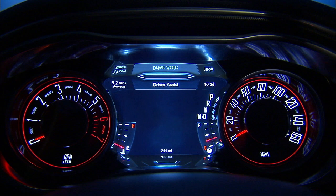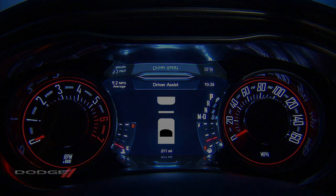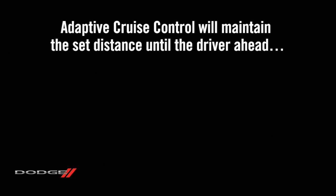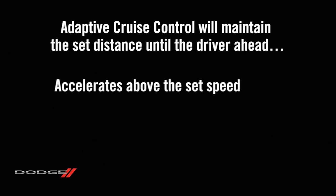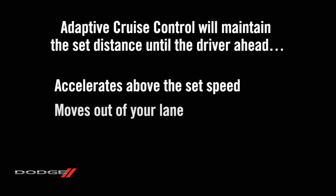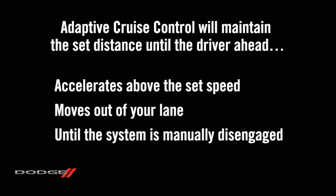You'll see the sensed vehicle indicator icon in the instrument cluster. The system will maintain the set distance until the driver ahead accelerates above the set speed, moves out of your lane, or until the system is manually disengaged.